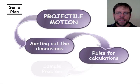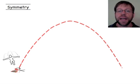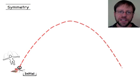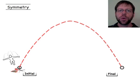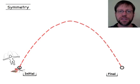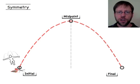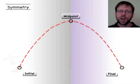Now let's look at some rules we can take advantage of when doing calculations. Going back to the parabola, I'm going to consider only three locations: the initial (just after launch, so the object already has a velocity sending it up), the final (just before it hits the ground, so it still has a velocity), and the midpoint, which is special.